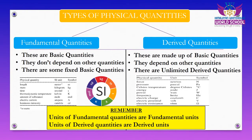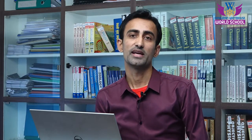For derived quantities, we have force, pressure, energy, power, and various other types. Their units and symbols are also listed on screen. All these quantities depend on the fundamental quantities. The units of fundamental quantities are called fundamental units, and the units of derived quantities are called derived units.